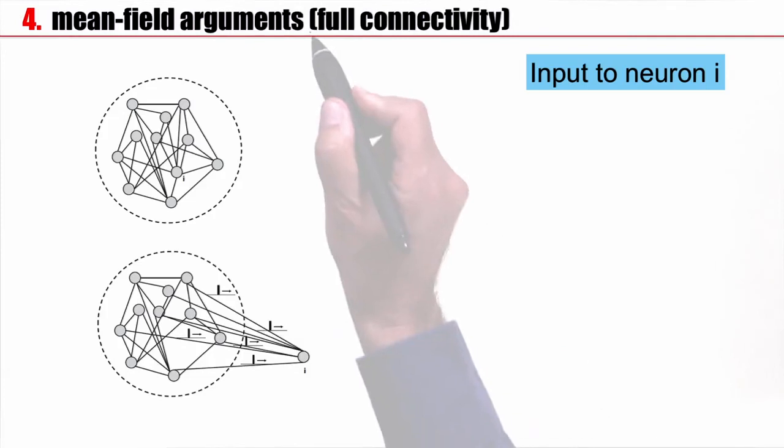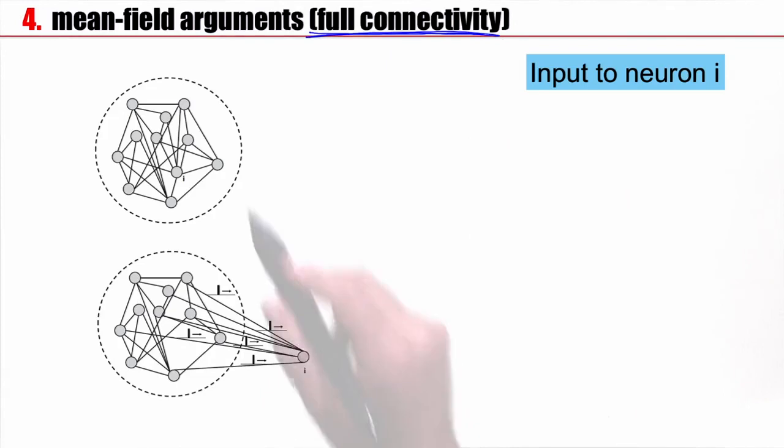In a network of n neurons, each neuron receives exactly n inputs from all other neurons. Just for the sake of visualization, this is my network, this is my neuron i. I can just take this neuron and pull it out, and then the network will look like this. Now I can see all these spikes arriving at this neuron, different spike trains arriving. I ask about the total input to this neuron i.